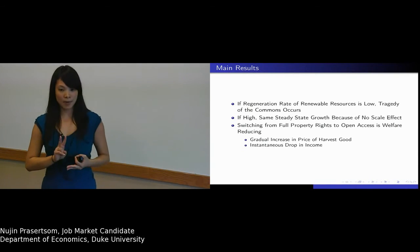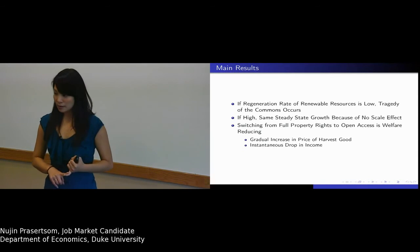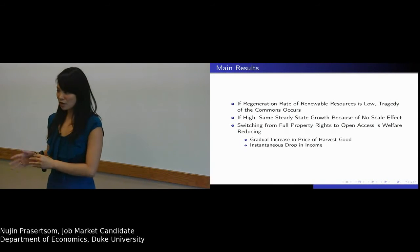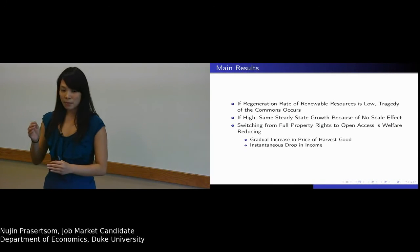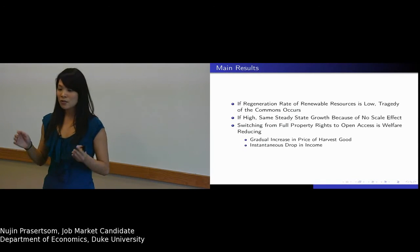It's because of two effects. The first one is through the price of the harvest good. At the very beginning, when you switch from well-defined property right to open access, the price of the fish will be lower because you allow people to come and harvest the fish.